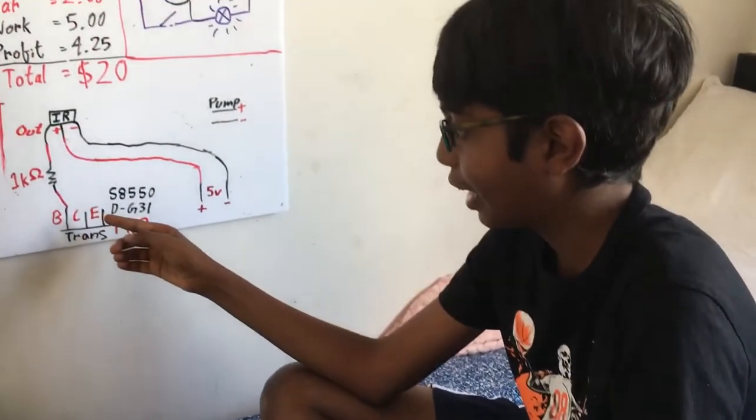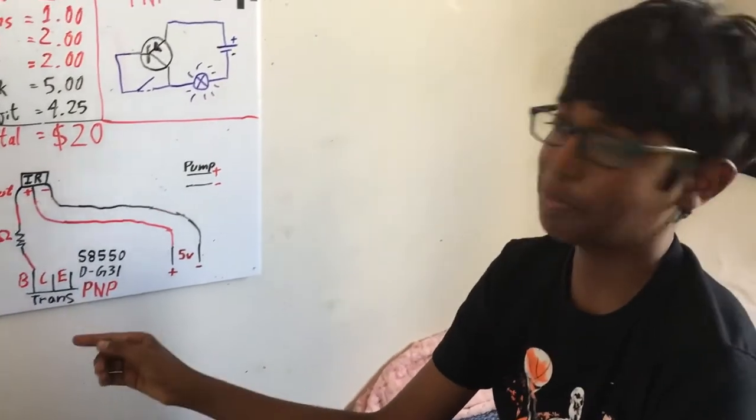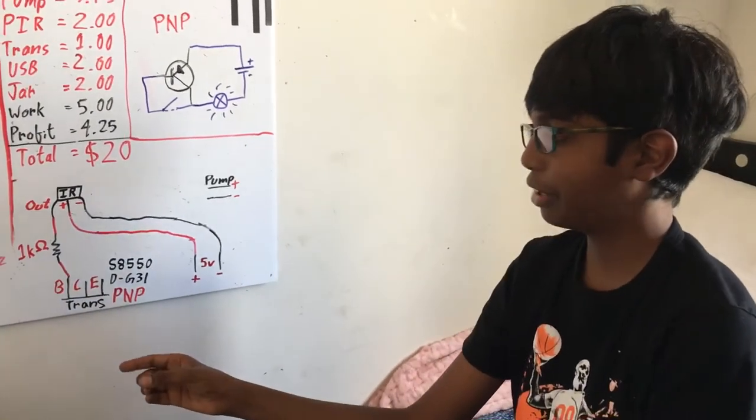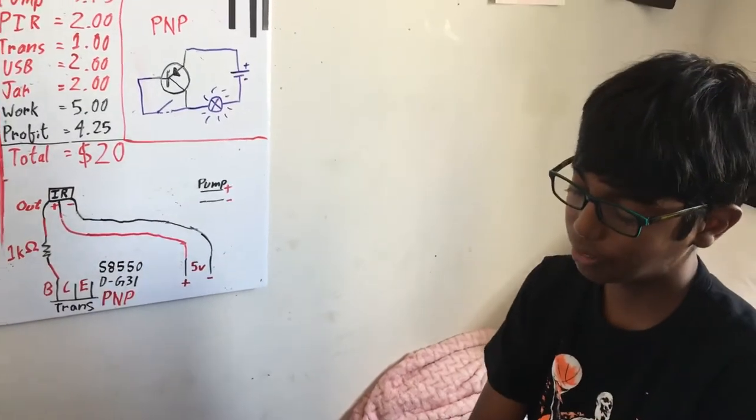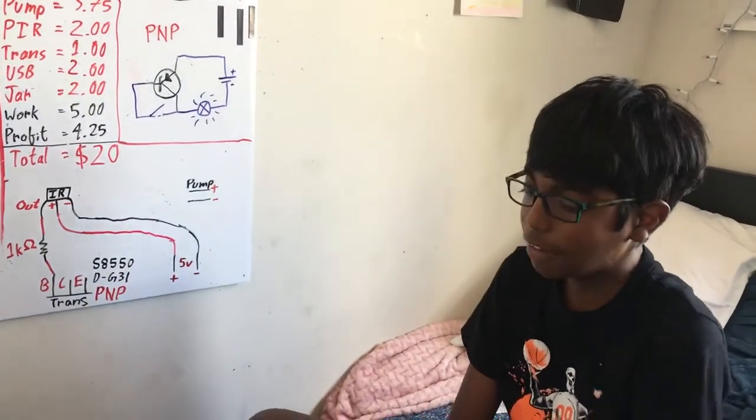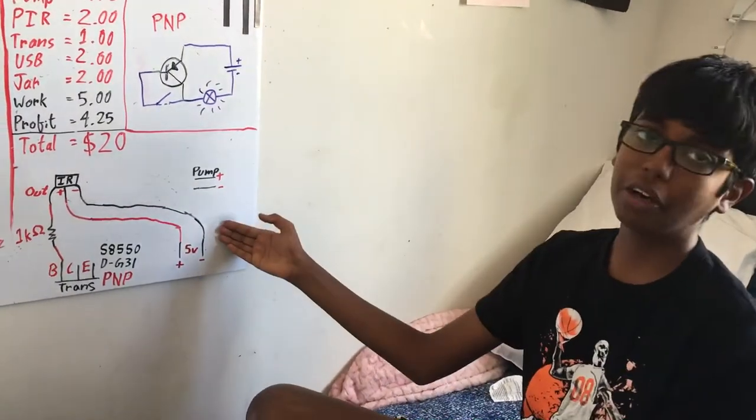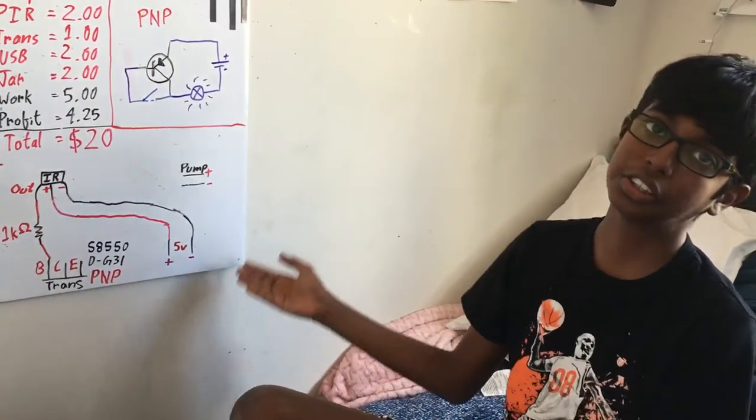We have the S8550 PNP junction transistor which will act like a high speed switch for our automated soap dispensing machine. And of course we need a five volt power supply to power all our circuit.